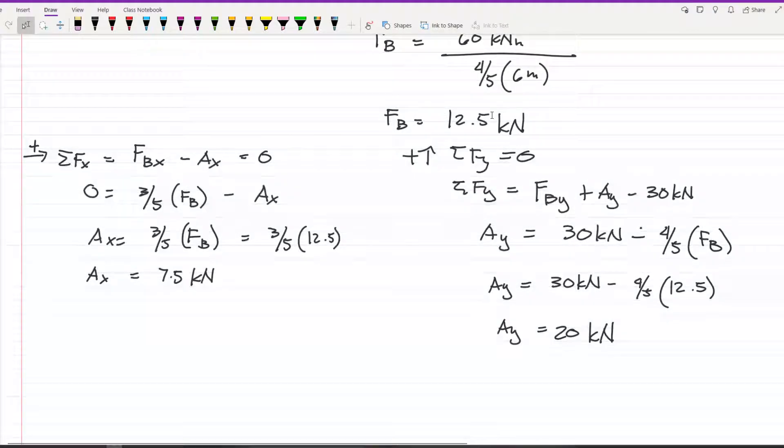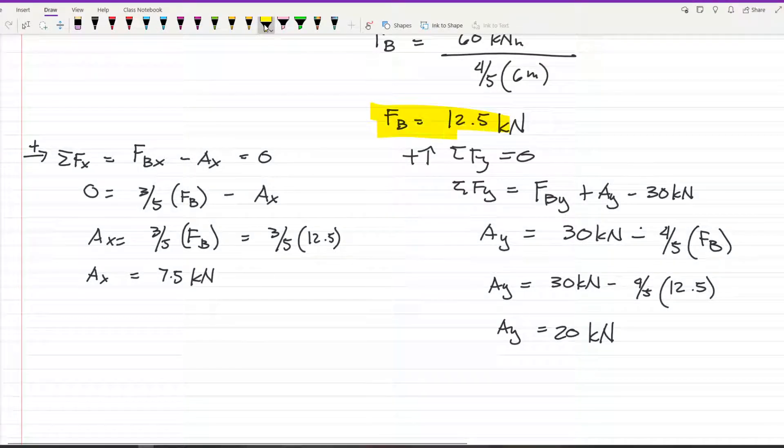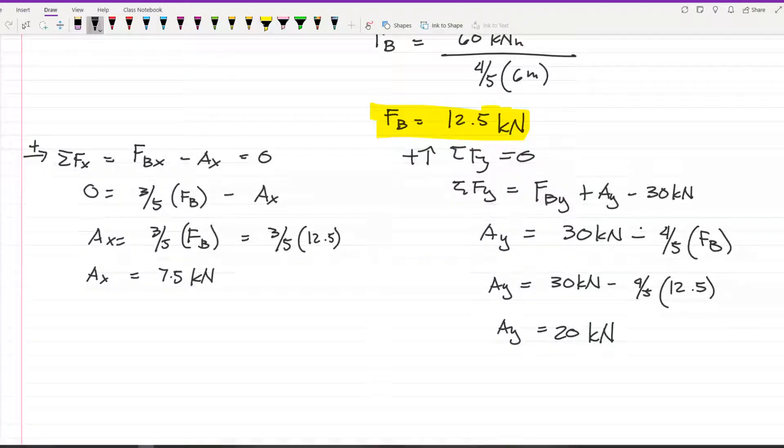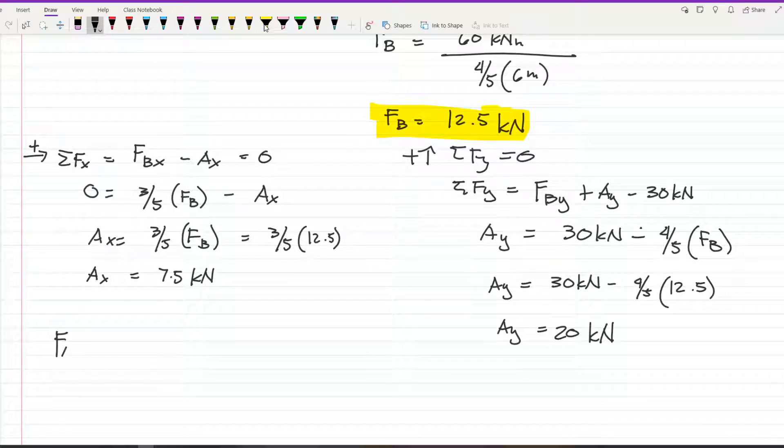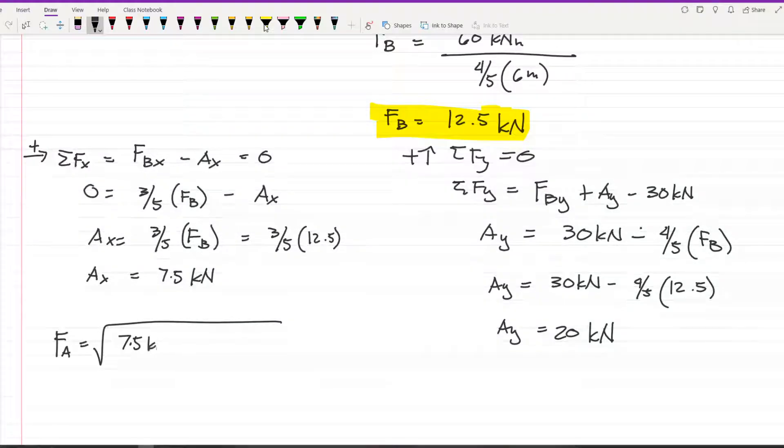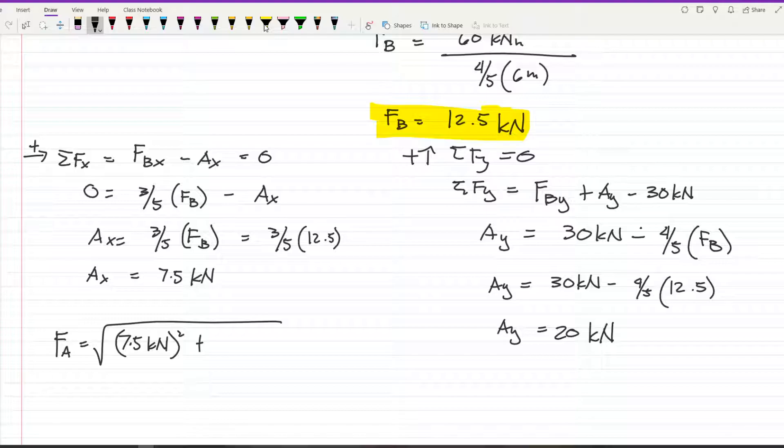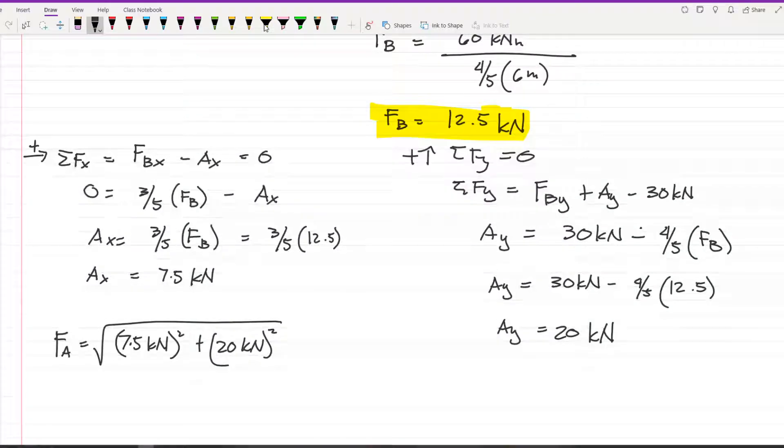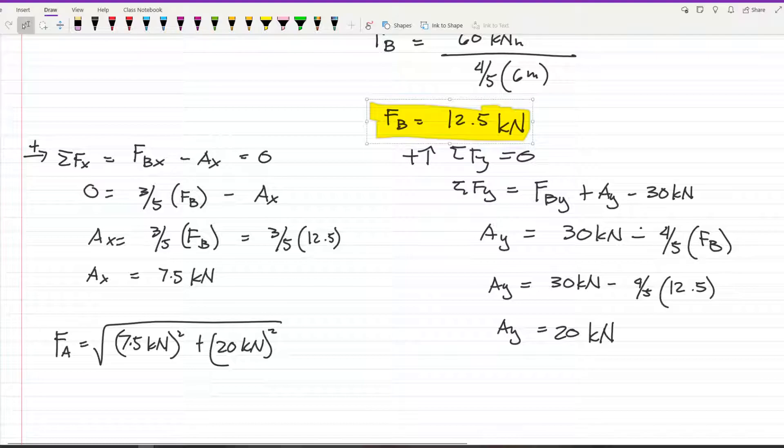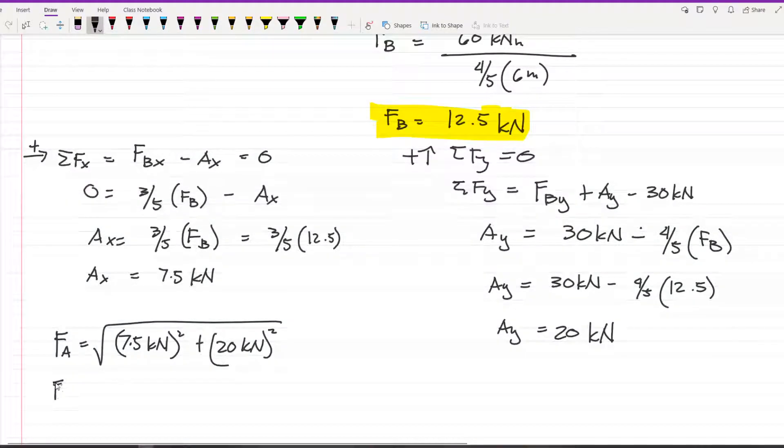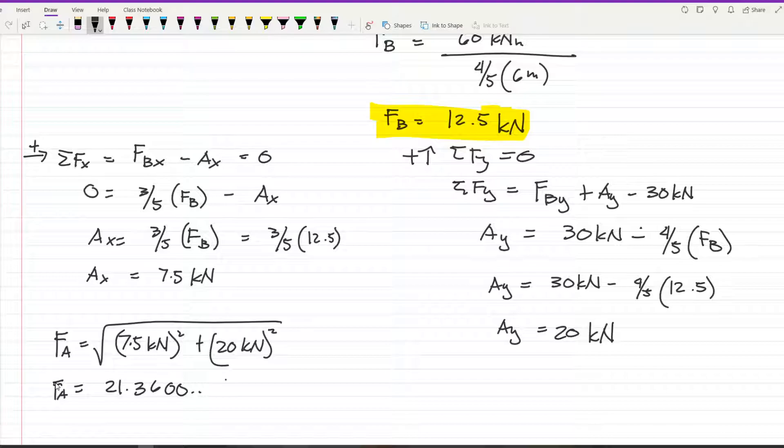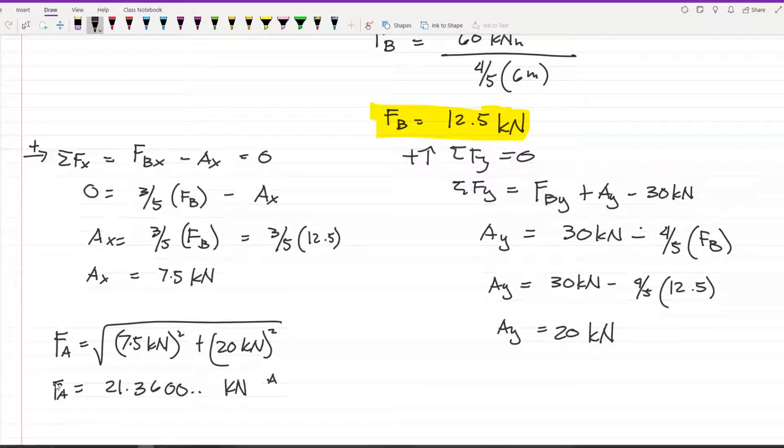Now we have the forces. F_B is 12.5, so we can use it in the formula. At A, F_A equals the resultant of A_x and A_y. A_x 7.5 kilonewtons squared plus 20 kilonewtons squared. F_A equals 21.36 kilonewtons.